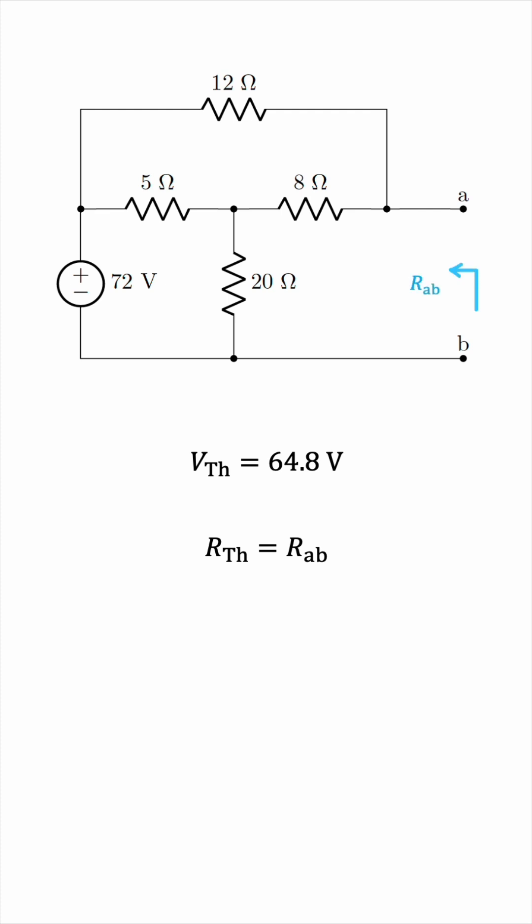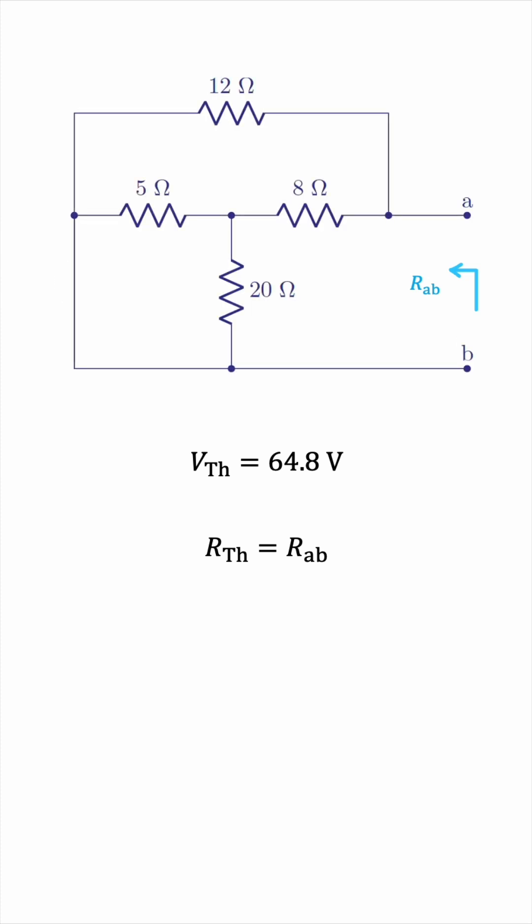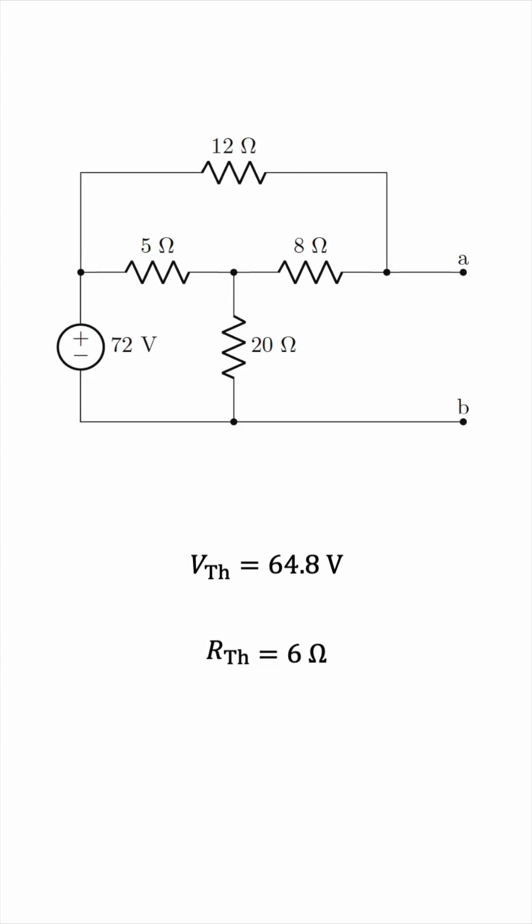And this method would be to find the equivalent resistance looking into terminals A and B, so RAB. In doing so, we treat every voltage source as a short circuit, and every current source as an open circuit. We only have a single source, which is a voltage source, so we can short it, and this will be the modified circuit. Now I already have a bunch of videos on calculating the equivalent resistance between two terminals. So I'm hoping you're an expert at this by now. I'm going to do everything in one line. We have 5 parallel with 20 plus 8 all parallel with 12. If you're having trouble understanding this equivalent resistance calculation, I'm hoping someone will help you out in the comments, because I'd like to think that we now have a community of equivalent resistance experts, if you will. The result of this will be 6 ohms, and that completes our calculation.